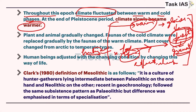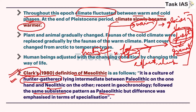Remember Clark's definition of Mesolithic - you can write this in your introduction to give a good impression. It is a culture of hunter-gatherers, food collectors, lying between Paleolithic and Neolithic. It has the same subsistence pattern as Paleolithic, but the difference was emphasis in terms of specialization, because although human beings were hunter-gatherers only, specialization features were coming up.